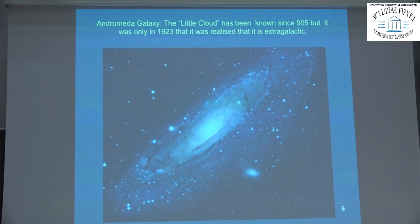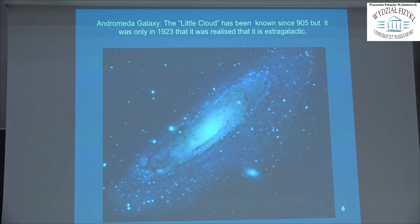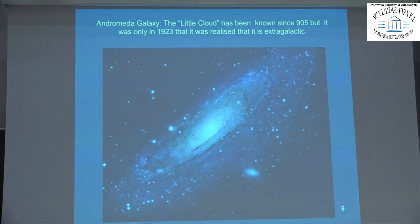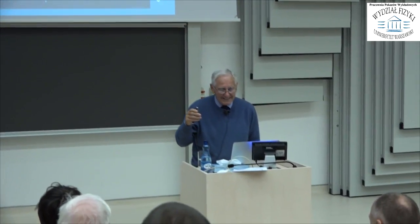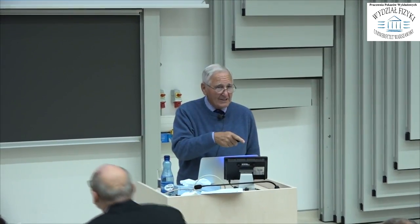This is all back in the 1920s — nobody believed there were any black holes around. Even neutron stars weren't understood at that time. In fact, it wasn't realised that there was anything outside our galaxy until about 1923. The Andromeda galaxy was thought to just be a fuzzy bunch of stuff floating around in our galaxy somewhere, but it wasn't realised until this time that it was actually extragalactic.